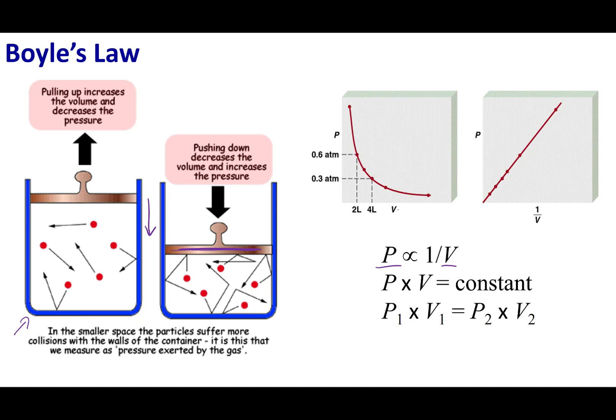He saw that as you increase the volume, the pressure drops. In other words, pressure is inversely proportional to the volume, meaning when one goes up, the other goes down. I can rearrange this proportionality to say that pressure times volume equals a constant, or P1 times V1 equals P2 times V2, where one is the initial state and two is the final state of the gas.